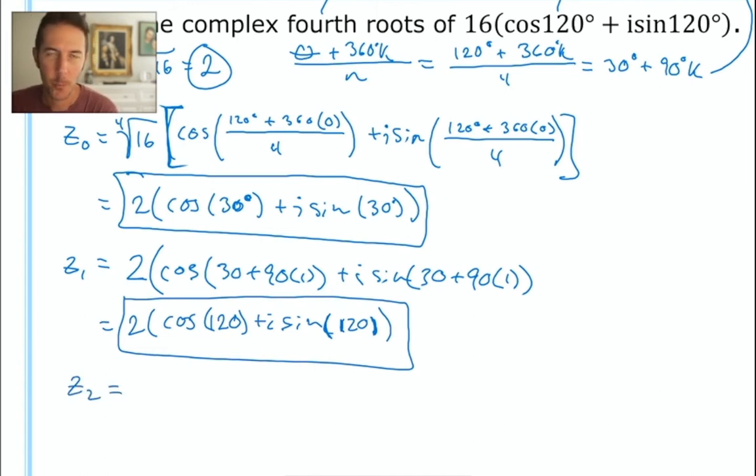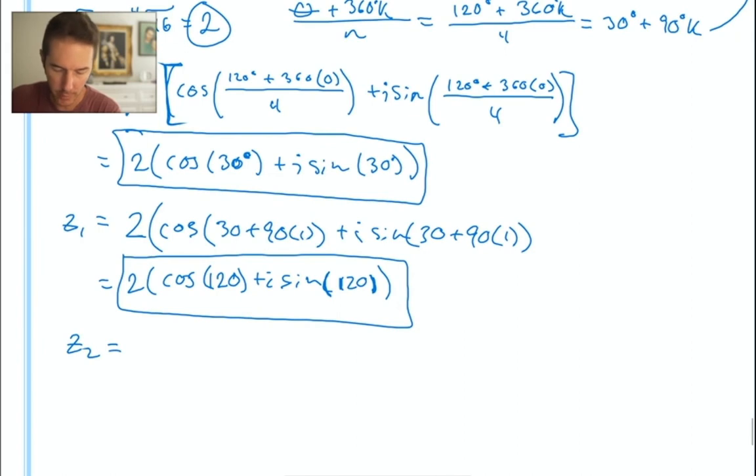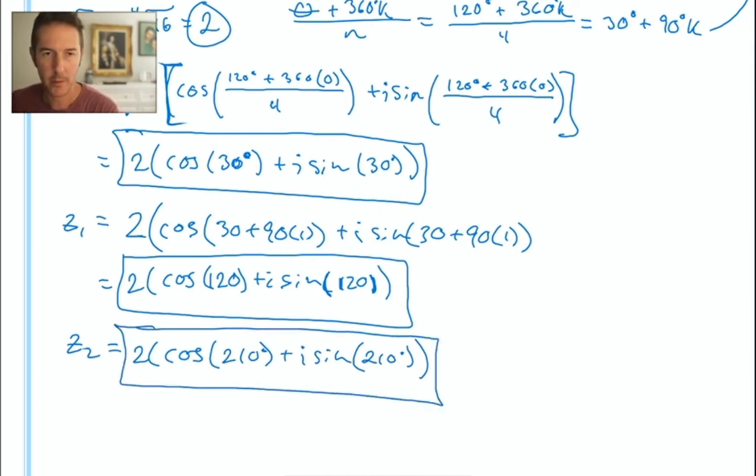Our third solution is going to have the same R value, but the angle measure is going to be increased by another 90. We started with 0 90s, here we had 1 90, here we're going to have 2 90s that get added on to the 30. So we're repeatedly adding an additional 90 degrees. I've got 2 times the cosine, 120 plus 90. I'm adding another 90 degrees, so that makes 210 degrees plus i times the sine of 210 degrees. And that's it. That's my third solution, right? See how recognizing the pattern helps to expedite the process?